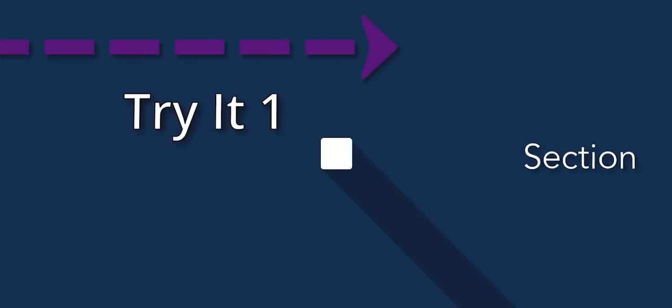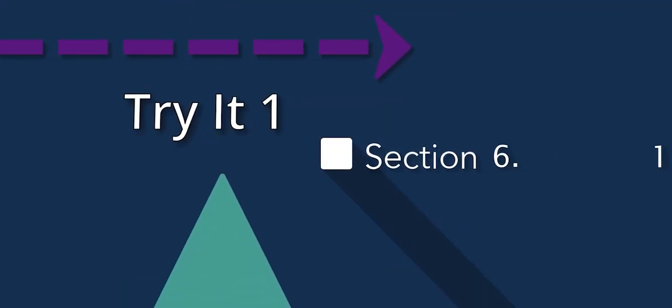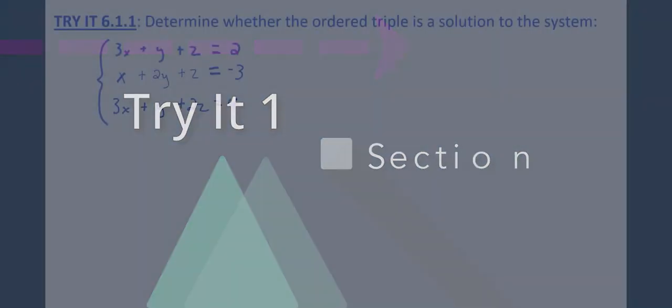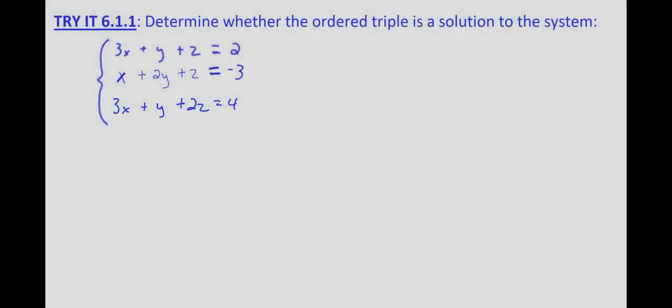With this exercise, we're given a system of three equations and three unknowns, and we're given two sets of ordered triples, and we're asked to determine whether the ordered triple is a solution to the system.